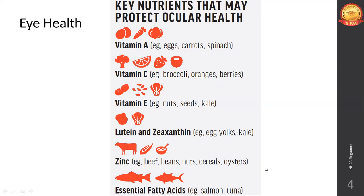Macular degeneration — the macula is a small area in your retina, the part of your eye in which images are formed. The retina has rod cells and cone cells. Cone cells are responsible for detecting colors; rod cells are the reason why you can see the difference between dim and well-lit areas. So the retina is made up of rod cells and cone cells, and the macula is a light-sensitive layer.